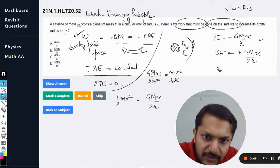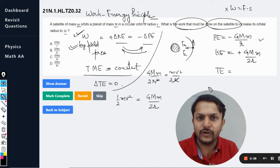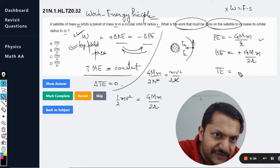Now moving further, we want to find the total energy. Total energy is the sum total of these two.